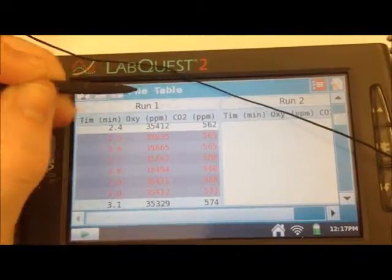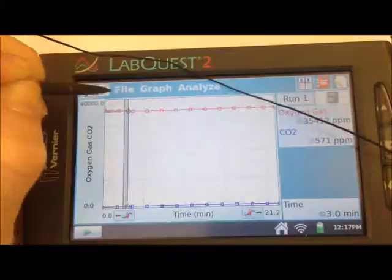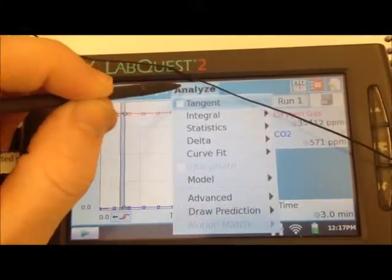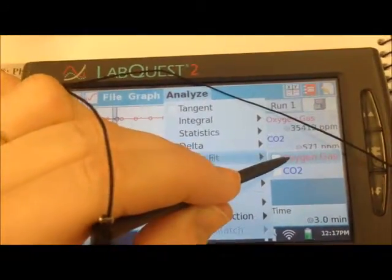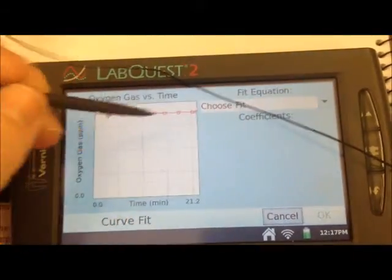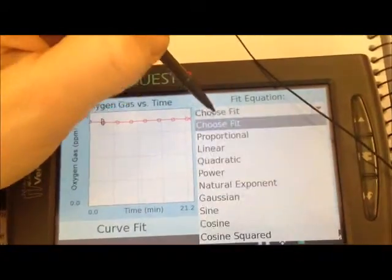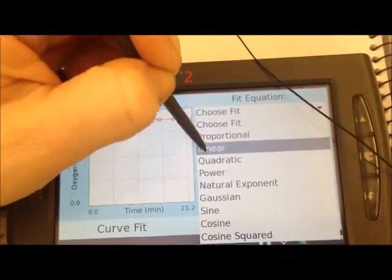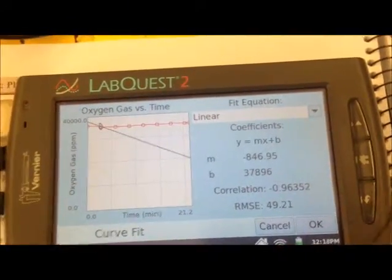So we're at the file table portion right now. We're going to go back over to this graphing area and hit analyze. After analyze, we want to choose curve fit. We'll do the oxygen gas first. It shows us just the oxygen gas. We need to choose the fit that we want. We're always going to choose linear, and then that way it will show us the slope and the y-intercept.